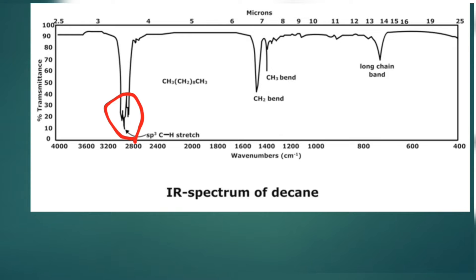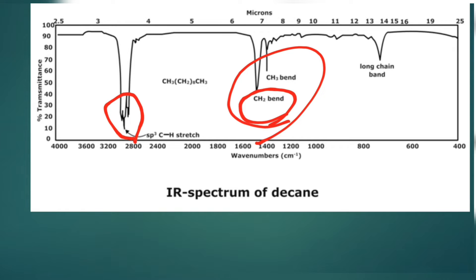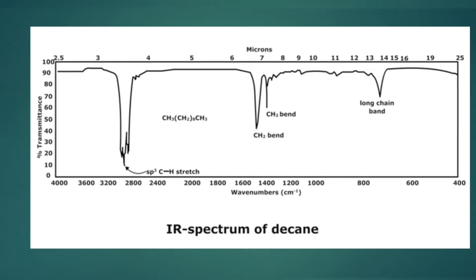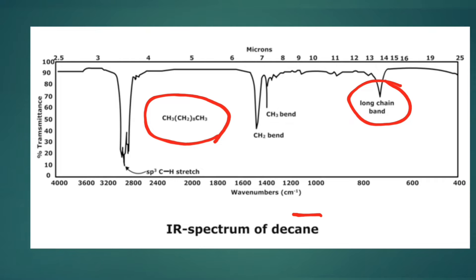Now, is this sp3 C-H a CH2 or CH3? You can find it by looking here. As you can see, we have a CH2 band and a CH3 band. This means that in our molecule we have both CH3 and CH2. Decane has the formula CH3-(CH2)8-CH3, and this peak indicates it is a long chain compound.